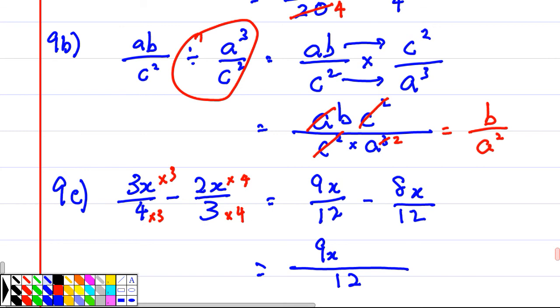9x minus 8x. And the final answer will be x over 12.